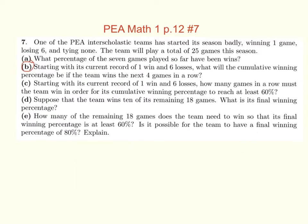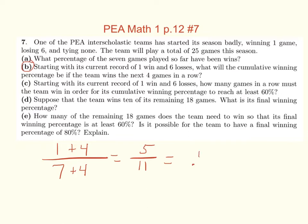B: starting with its current record of one win and six losses, so one out of seven. What will the cumulative winning percentage be if the team wins the next four games in a row? So you'd add four games to the seven, so they've played a total of 11 games, and you add four wins, so you get five over 11, which equals 0.4545 repeating, which is 45%.